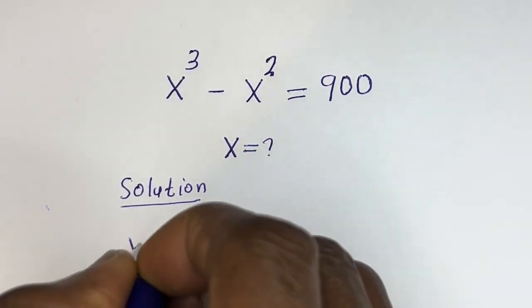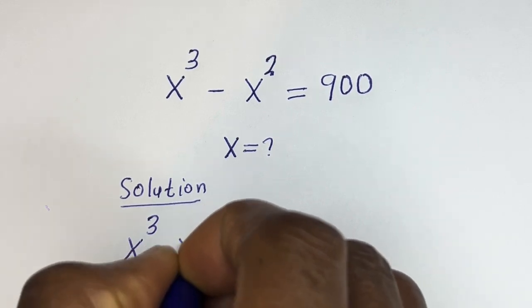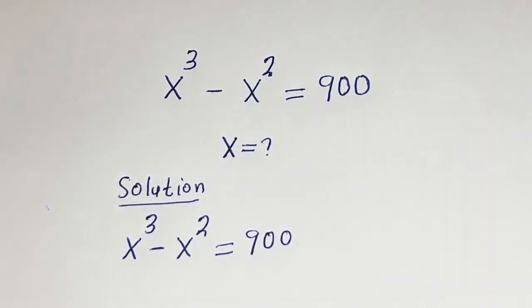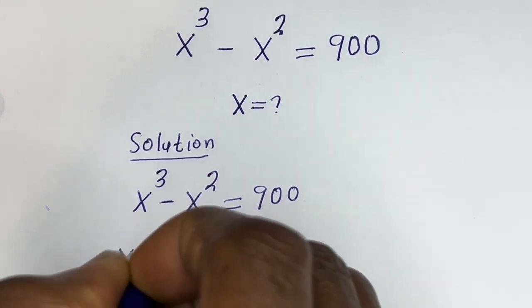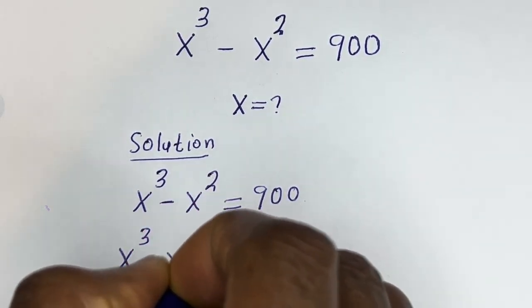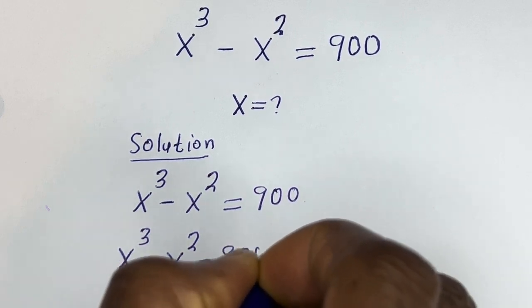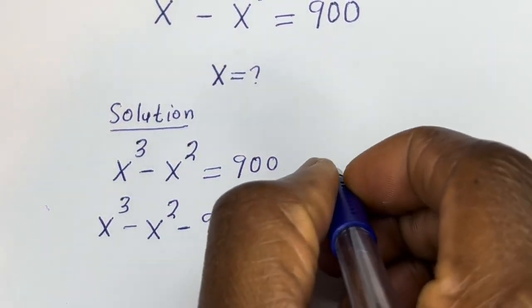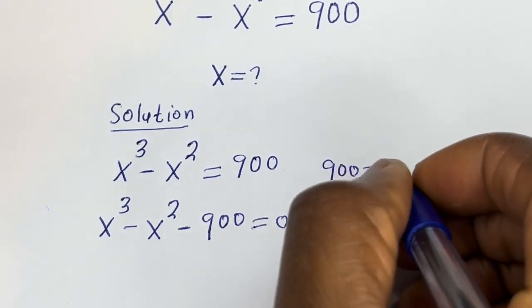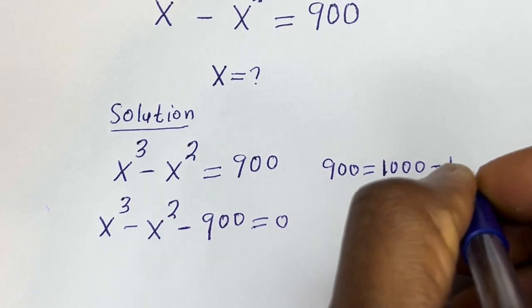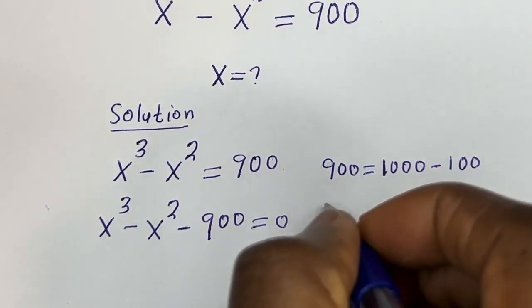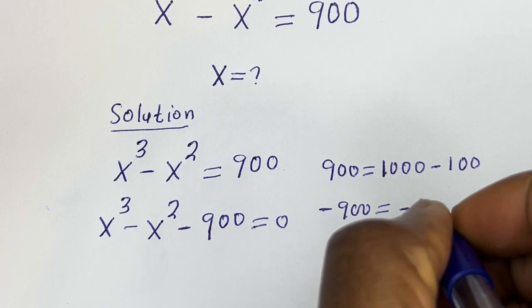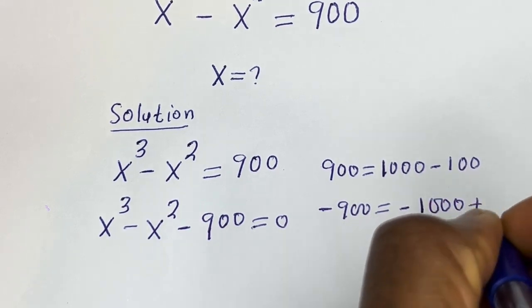Here we have s to the power of 3 minus s squared is equal to 900. Then we have s to the power of 3 minus s squared minus 900 is equal to 0. Take note that 900 is equal to 1000 minus 100, so minus 900 will be equal to minus 1000 plus 100.